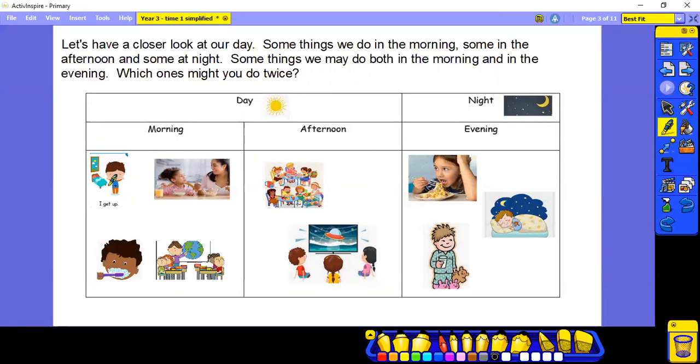So in the morning, we normally get up, have breakfast, clean our teeth, go to school. And they are some of the things we would normally do in the morning. In the afternoon, we would have our lunch. We might watch TV when we get home from school. In the evening, we would have our dinner, put our pyjamas on and go to bed.